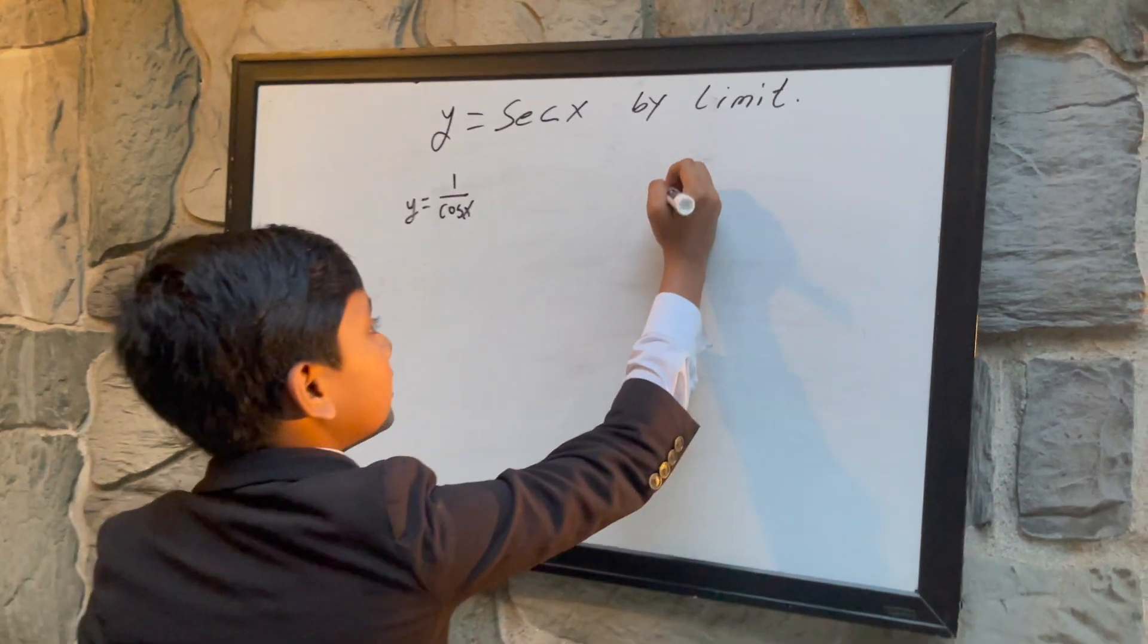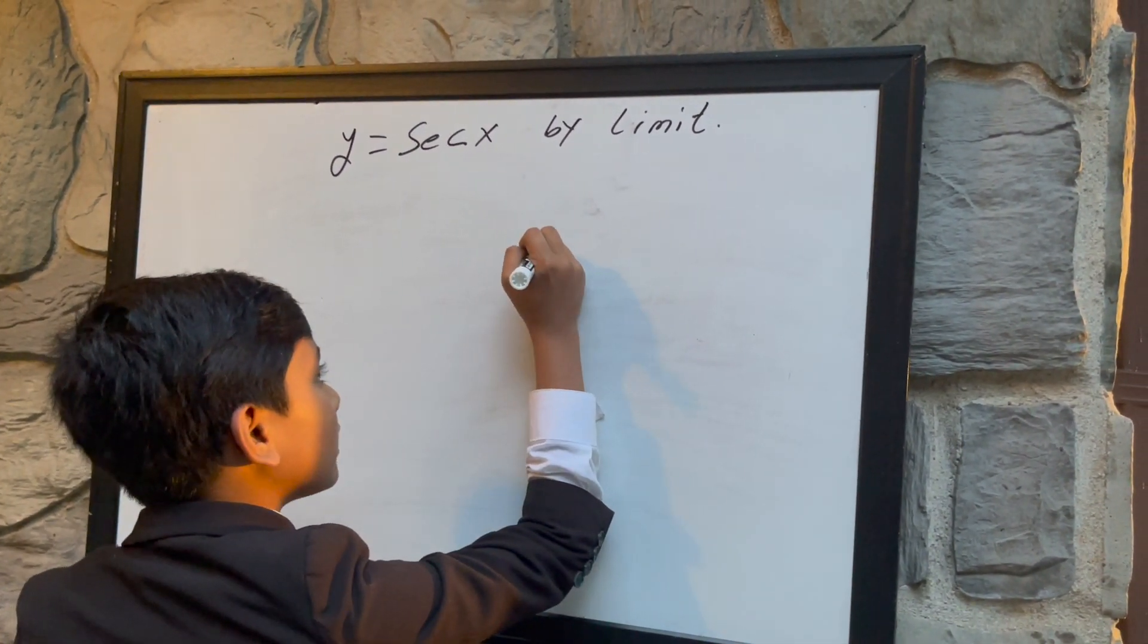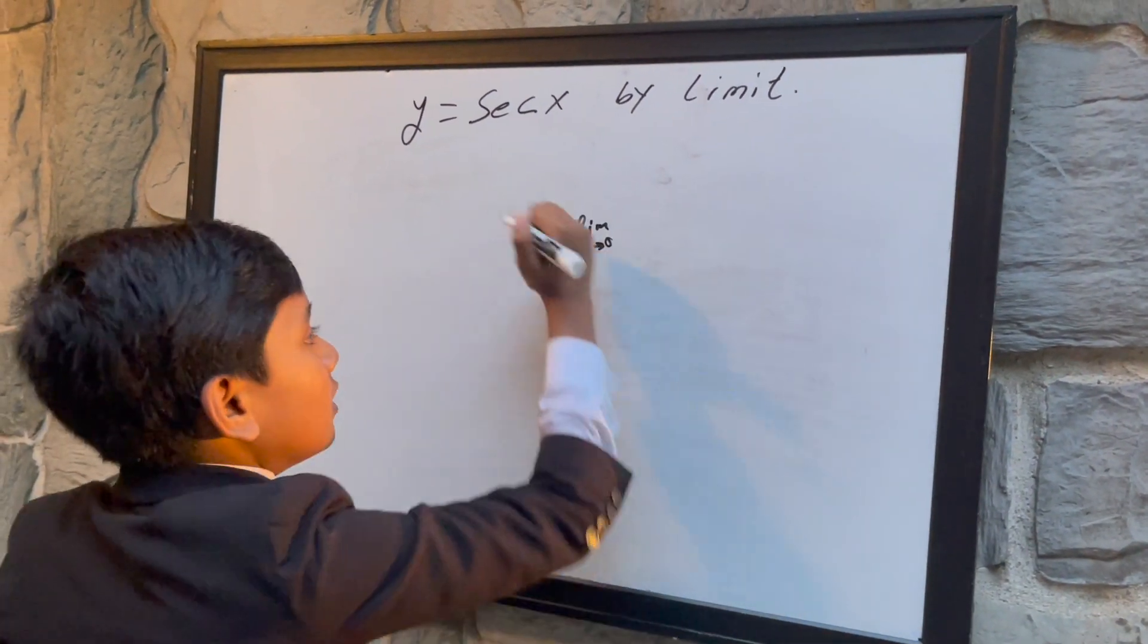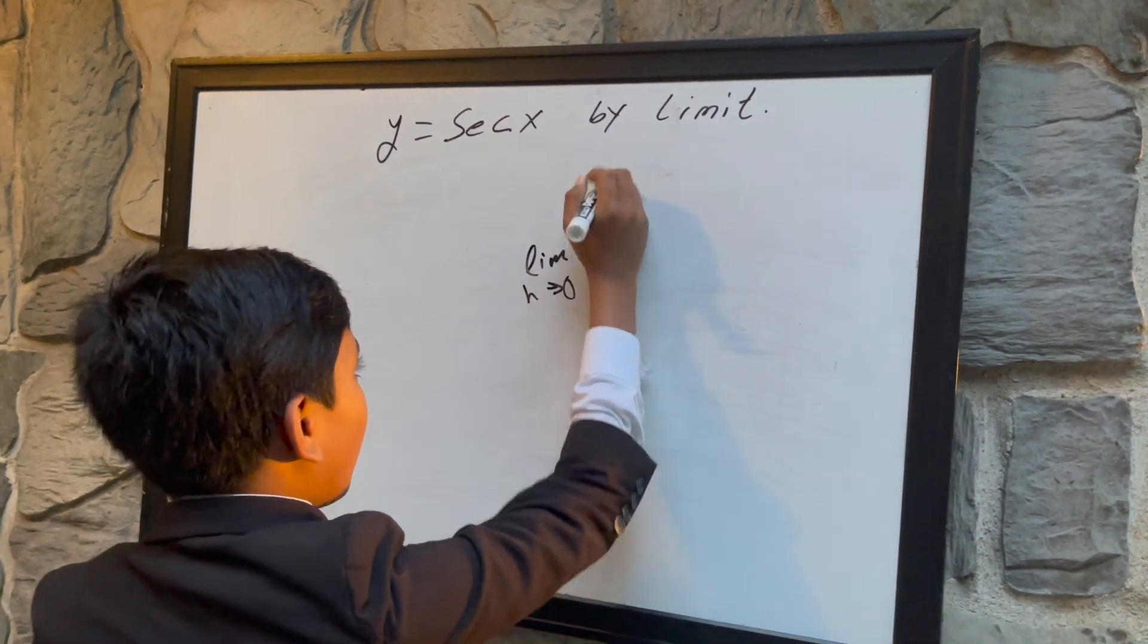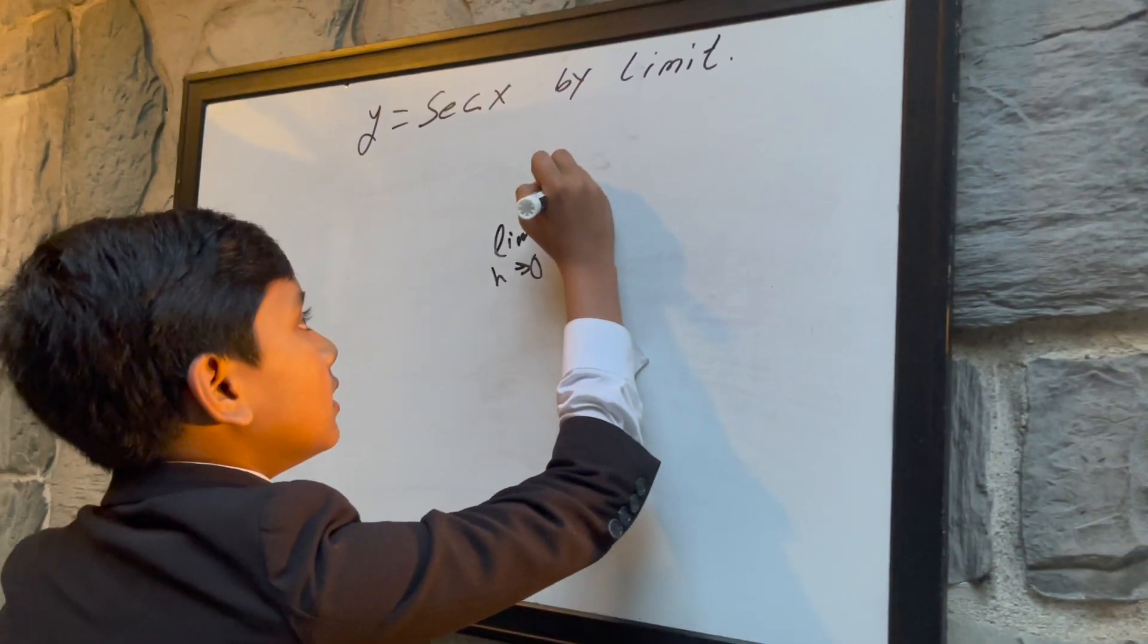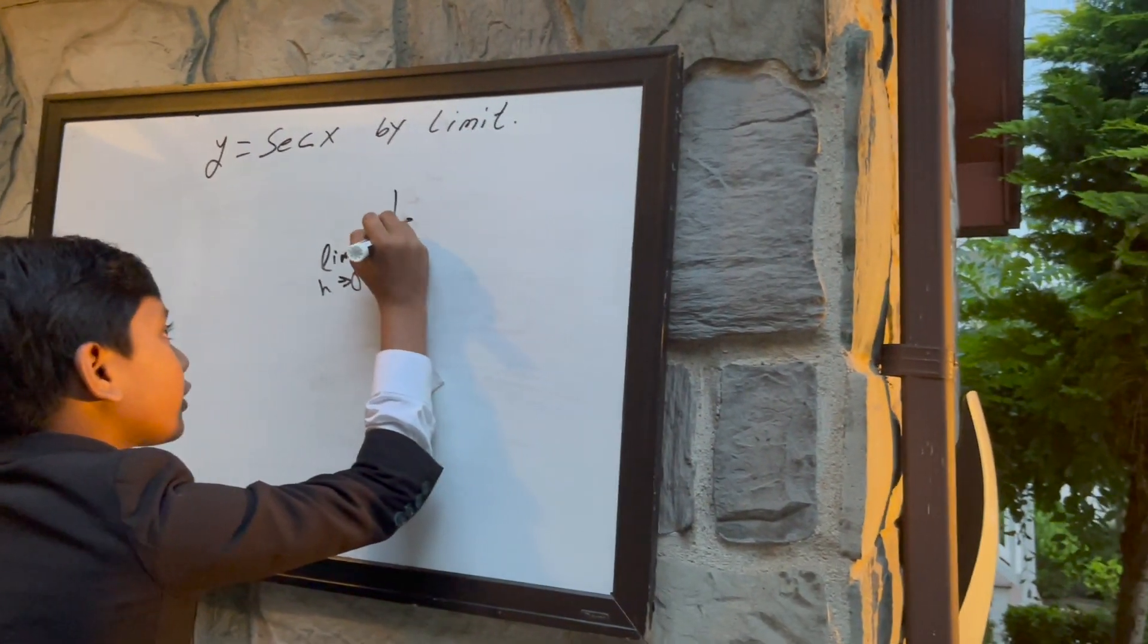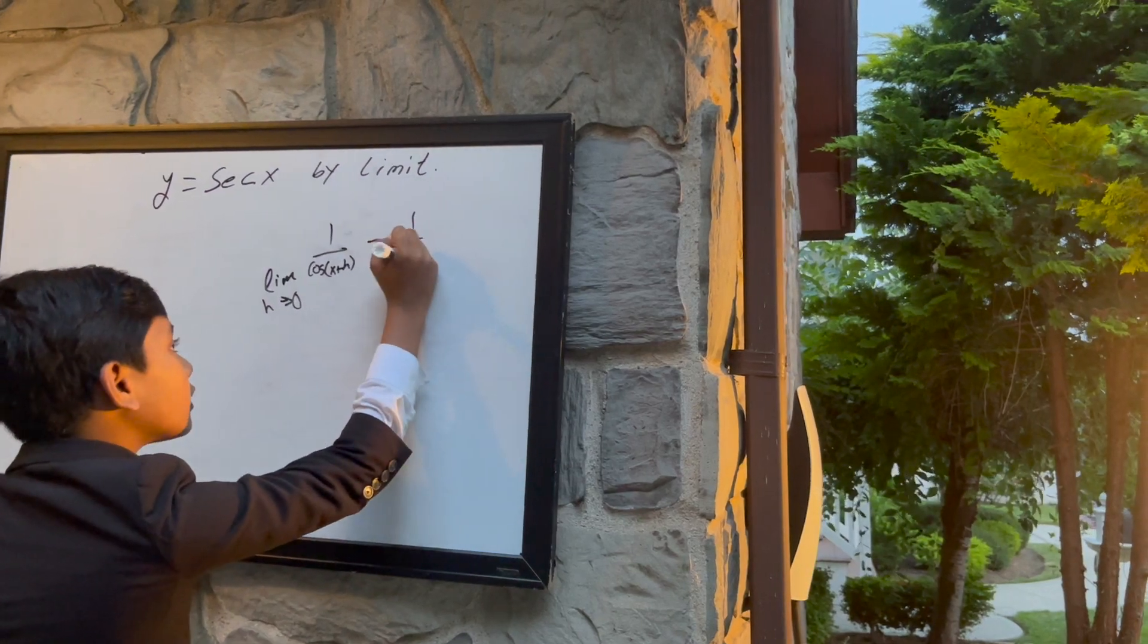So, let's start from way over here. Because we're taking the limit as h approaches 0 of, we're taking the limit as h approaches 0 of secant, or rather 1 over cosine x plus h minus 1 over cosine x.